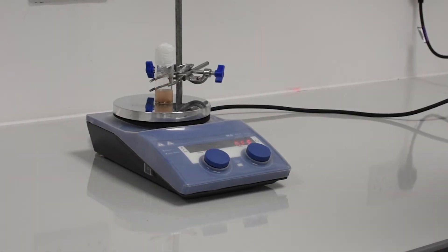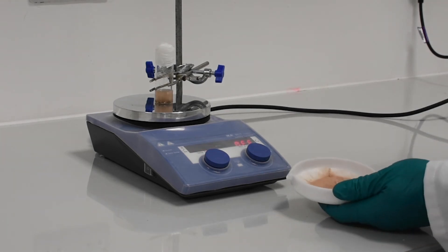The artificial sea was then filtered through filter paper. In true Blue Peter fashion, here's one we made earlier.